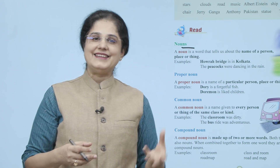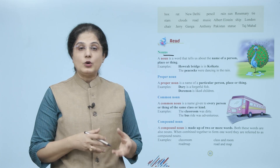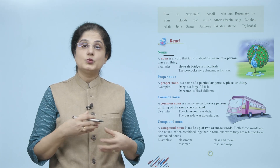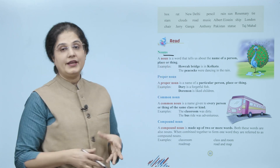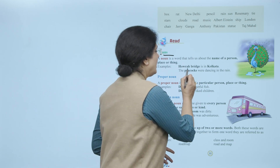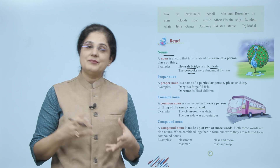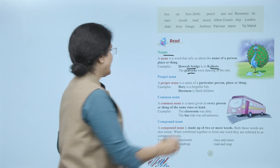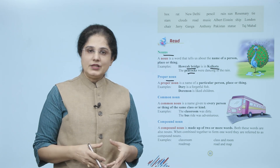So if we look at these examples: Howrah Bridge is in Kolkata. The peacocks were dancing in the rain. To in sentences mein jo hamaare highlighted words hain, jaisi ki Howrah Bridge, Kolkata, peacocks — yeh kya hain? Yeh hamaare nouns hain.